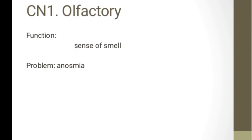After memorizing the types, let us discuss the functions of each cranial nerve. Let us start with cranial nerve 1, the olfactory. Its function is olfaction or the sense of smell. The common problem is anosmia — the loss of the sense of smell.